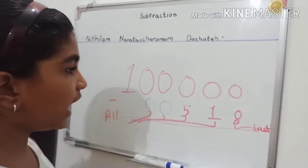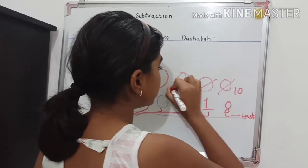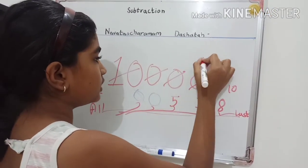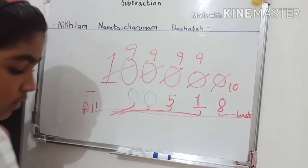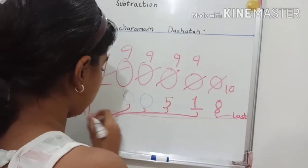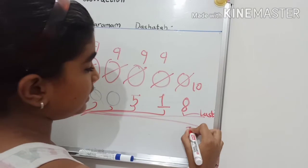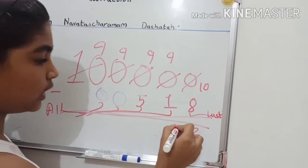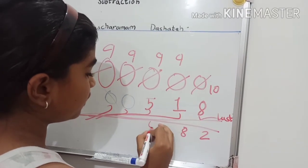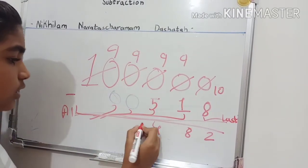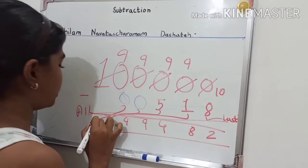After that, let's convert: make them all nine. Now let's subtract: 10 minus 8 is 2, 9 minus 1 is 8, 9 minus 5 is 4, 9 minus 0 is 9, and 9 minus 0 is 9. That's your answer: 98492.